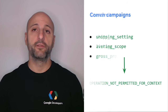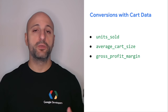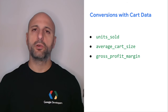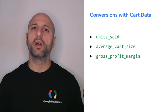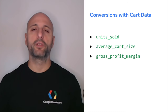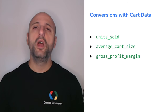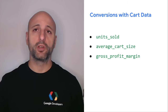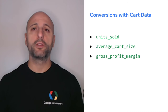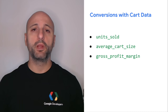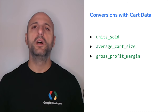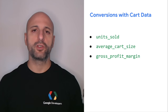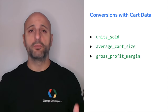For e-commerce advertisers, new sales and profit metrics are now available, such as the number of units sold, the average size of a shopping cart, and the gross profit margin of each transaction. All these metrics are exposed in several different reporting resources and are available to all advertisers who implement conversions with cart data. A link to the specific documentation will be in the video description below.